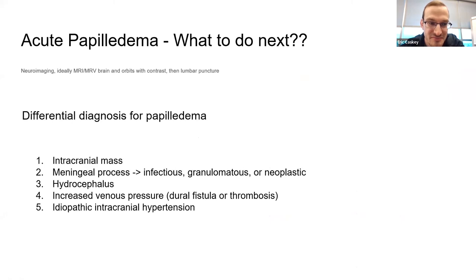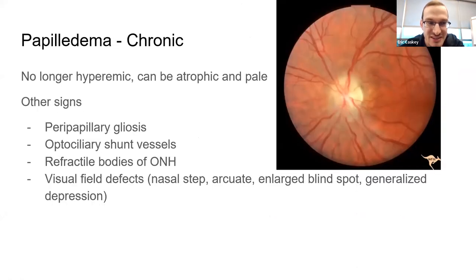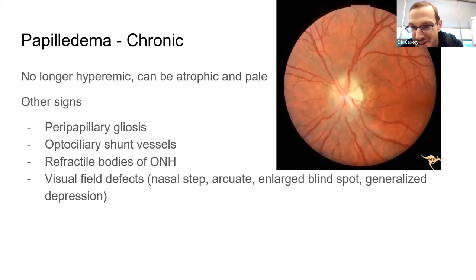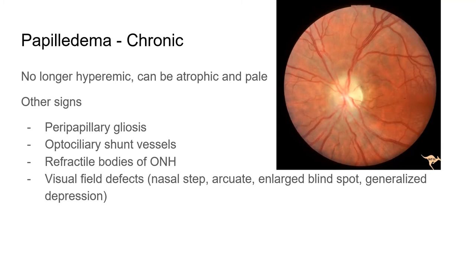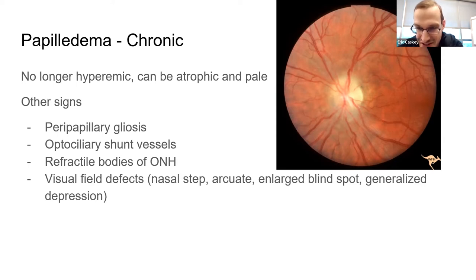There's your short differential for papilledema. Chronic papilledema has its own findings. Looking at this example of chronic papilledema: there's still a little blurring of the disc margin and you can see gliosis forming. This is closest to what a vaccinated disc appearance looks like — gliosis and chronic changes. Nice job identifying that.